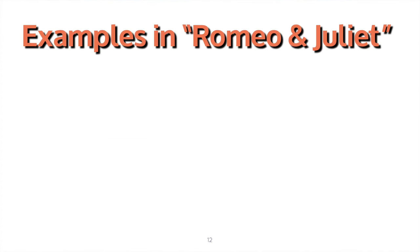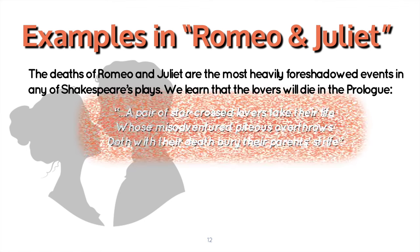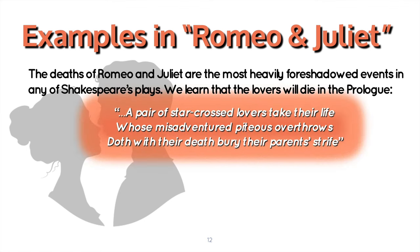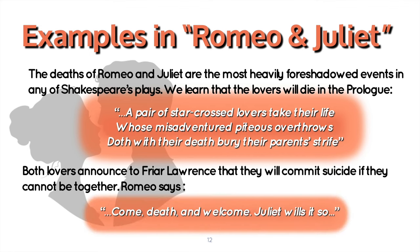Now let's take a look at examples in Romeo and Juliet. The deaths of Romeo and Juliet are the most heavily foreshadowed events in any of Shakespeare's plays. We learn that the lovers will die in the prologue: 'A pair of star-crossed lovers take their life, whose misadventure's piteous overthrows doth with their death bury their parents' strife.' Both lovers announce to Friar Lawrence that they will commit suicide if they cannot be together. Romeo says: 'Come, death, and welcome. Juliet wills it so.'